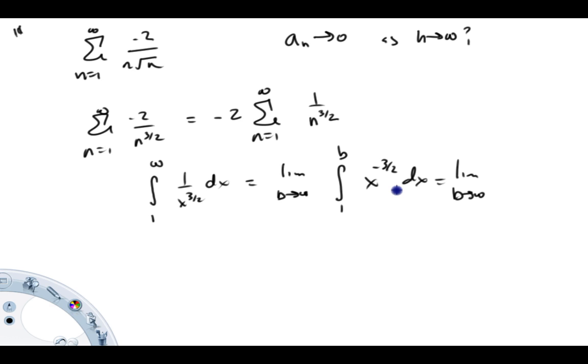Alright, antiderivative x to the minus 3 halves is x to the minus 1 half times negative 2 over 1.